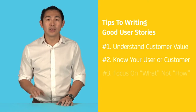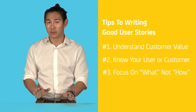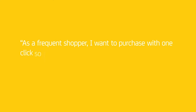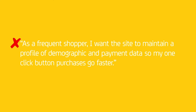My next tip is that user stories, just like traditional requirements, need to focus on the what and not the how. A good user story might be: 'As a frequent shopper, I want to purchase with one click so I can buy without hassle.' This story describes a goal without getting into the implementation details. A bad example is: 'As a frequent shopper, I want the site to maintain a profile of demographic and payment data, so my one-click button purchases go faster.' I've now told the developers exactly how to build it — it might not be the best way to provide that value, and my story doesn't leave them any options.